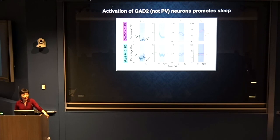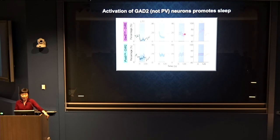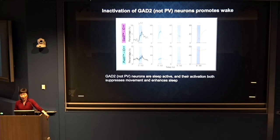When we optogenetically activated these cells — our standard protocol is laser on for two minutes per trial — we found that as soon as we turn on the laser, within seconds there's a huge reduction of locomotion, other movements, and even quiet wakefulness, with a corresponding increase in sleep. PV neuron activation had very little effect. When we inactivated the GAT2 cells, movement increased and sleep decreased. Again, PV cells had very little effect. The conclusion: GAT2, but not PV cells, are sleep-active and sleep-promoting — their activation suppresses movement and induces sleep.